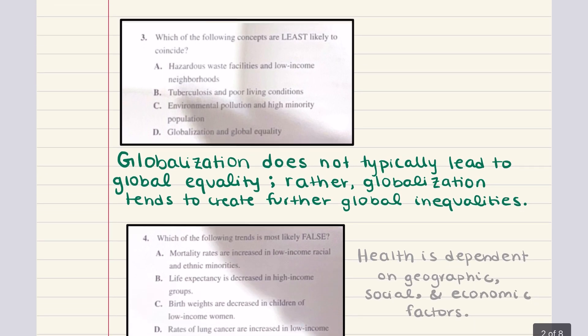Let's tackle problem three, which asks: which of the following concepts are least likely to coincide? Answer A — hazardous waste facilities and low income neighborhoods — these do coincide. We talked about how facilities and factories that are undesirable usually end up being built in low income neighborhoods because those neighborhoods don't have the economic or political power to stop such buildings from taking over.